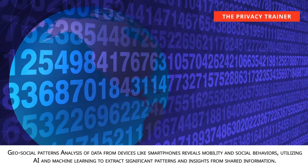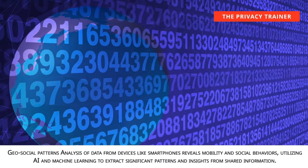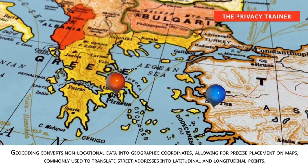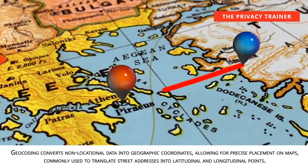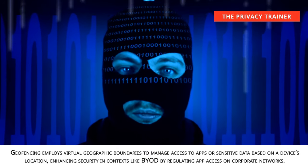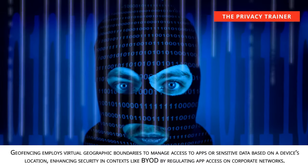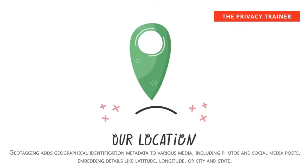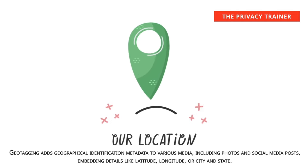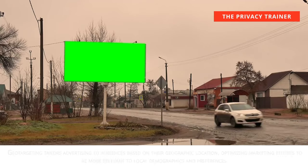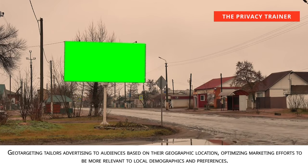Geosocial patterns. Analysis of data from devices like smartphones reveals mobility and social behaviors, utilizing AI and machine learning to extract significant patterns and insights. Geocoding. Converts non-locational data into geographic coordinates, allowing for precise placement on maps, commonly used to translate street addresses into latitudinal and longitudinal points. Geofencing. Employs virtual geographic boundaries to manage access to apps or sensitive data based on a device's location, enhancing security in contexts like BYOD by regulating app access on corporate networks. Geotagging. Adds geographical identification metadata to various media, including photos and social media posts, embedding details like latitude, longitude, or city and state. Geotargeting. Tailors advertising to audiences based on geographic location, optimizing marketing efforts to be more relevant to local demographics and preferences.